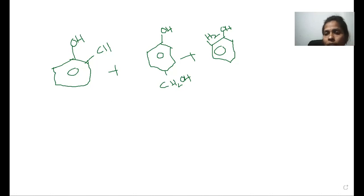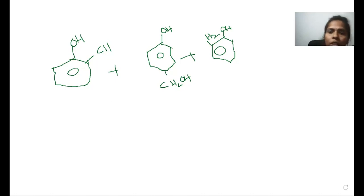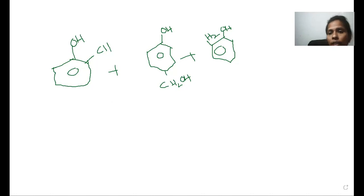With this, we have completed the topic of plastics. In the next class, I will cover all the fibers — there are only two fibers and they are very similar to each other. After that comes rubber. In the next class I will complete the fibers and half of the rubbers, and afterwards I will start the conducting polymers.